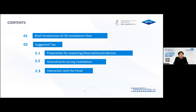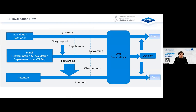In the following presentation, in order to allow you to have a clear picture of the Chinese invalidation procedure, I will first give you a brief introduction of the Chinese invalidation flow, and then share some tips in three aspects: preparation for reasoning, observations and evidences; amendments during invalidation; and interaction with the panel. Now let's begin with the Chinese invalidation flow.